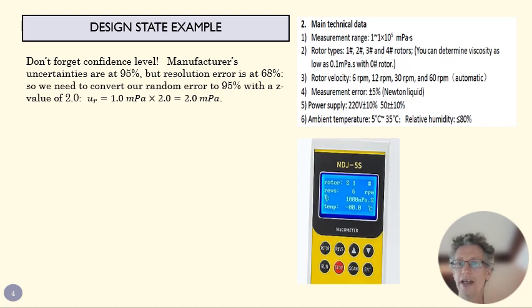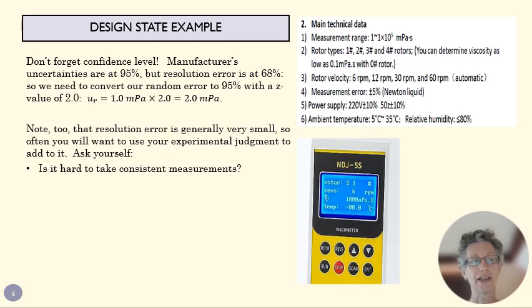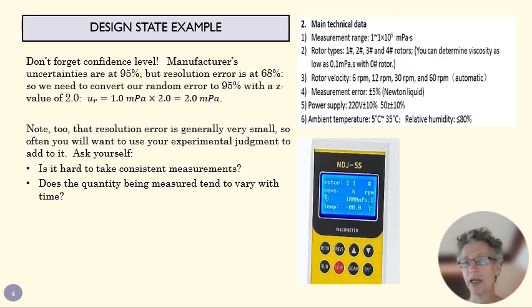Now at the design stage, this is a little complicated, because resolution error tends to be really small. And we probably in a lot of cases are going to have a random uncertainty that's larger than just that resolution error. So in a case like this we'd ask ourselves, is it hard to take consistent measurements? Or is there something about our experimental setup that means that we're not always going to get the same reading? And does the quantity itself tend to vary with time? And if that quantity varies with time, then our random error is going to be significantly larger.